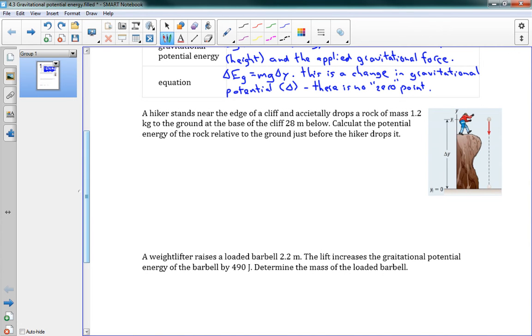The first problem says a hiker stands near the edge of a cliff and accidentally drops a rock of mass 1.2 kilograms to the ground at the base of the cliff 28 meters below. Calculate the potential energy of the rock relative to the ground just before the hiker drops it.